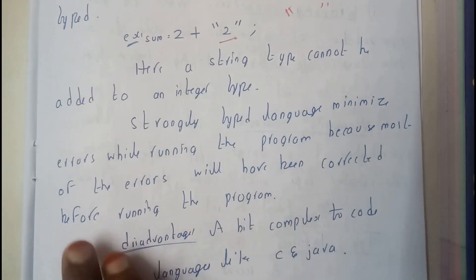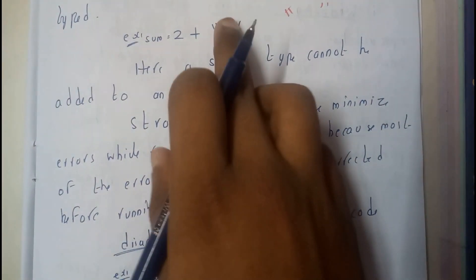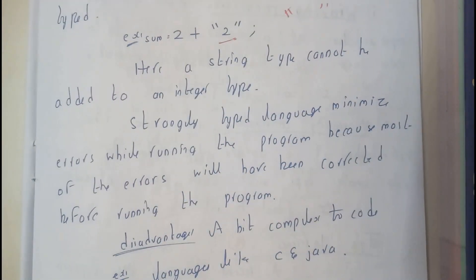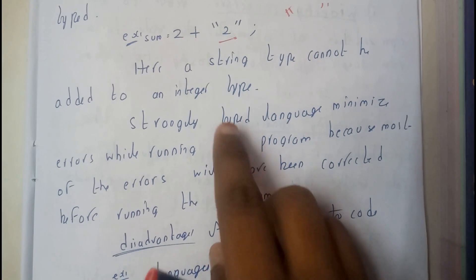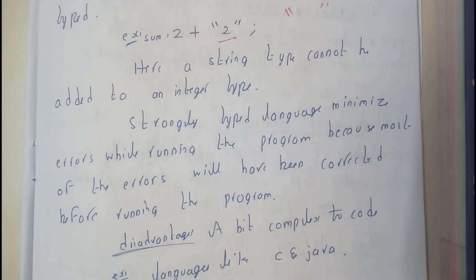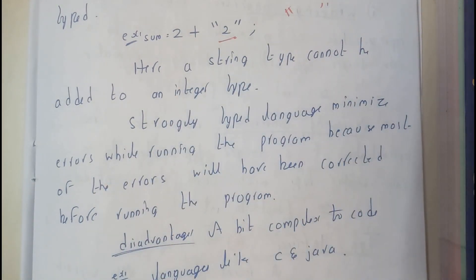If you correct these errors by removing those inverted commas, then that error will be lost. So if you are doing it before compilation or before running the program, those programs we call strongly typed.